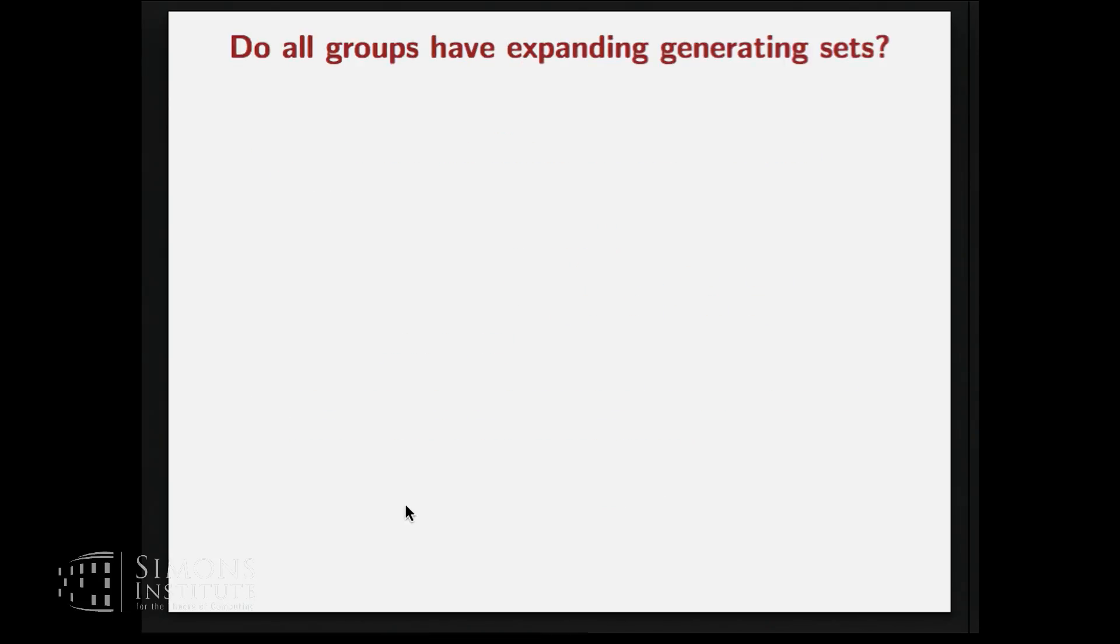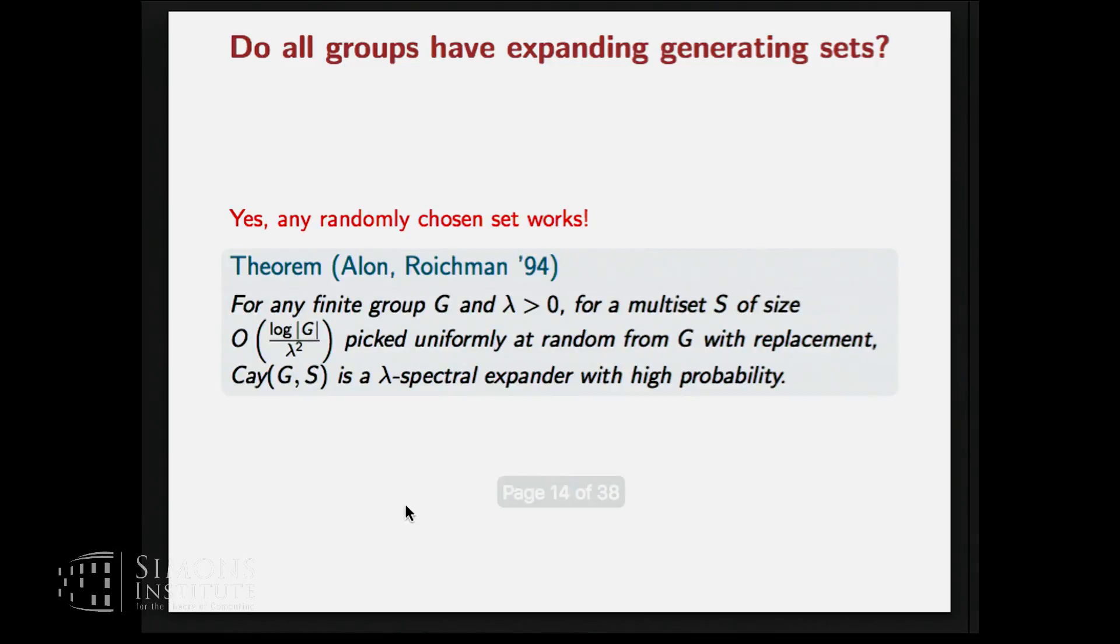So the first question of course is do they at all exist? So do all groups have expanding generating sets? And the answer is yes. And in fact not only that they exist, they exist in large numbers. So if we randomly pick a subset, with high probability it will be an expanding generating set. So this is a theorem by Alon and Roichman which gives a randomized construction for expanding generating sets. And you just have to pick these many elements uniformly at random from G and we'll get a lambda spectral expansion with high probability.